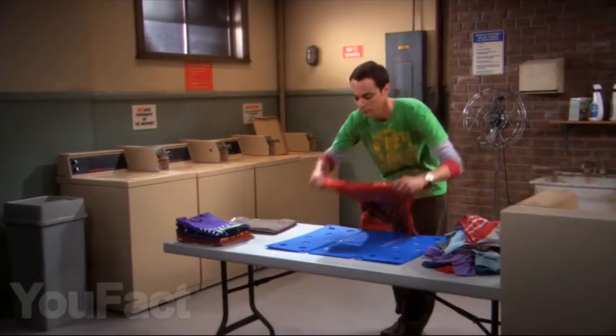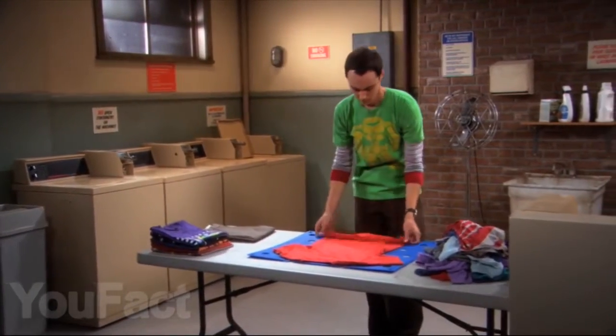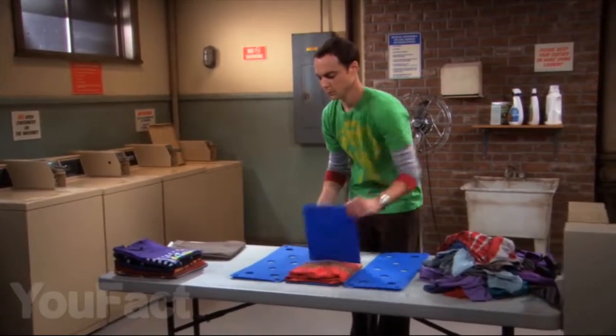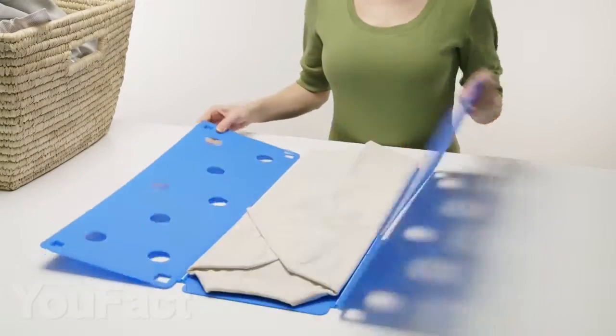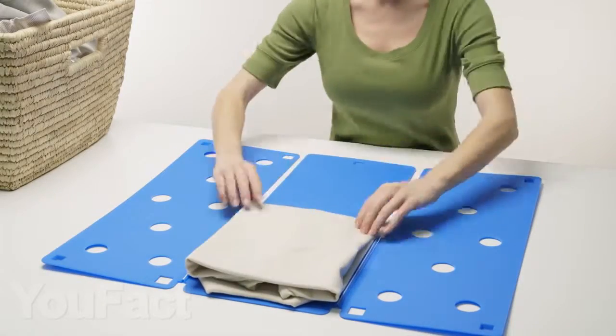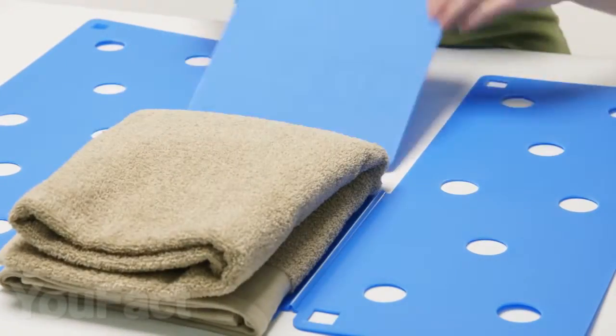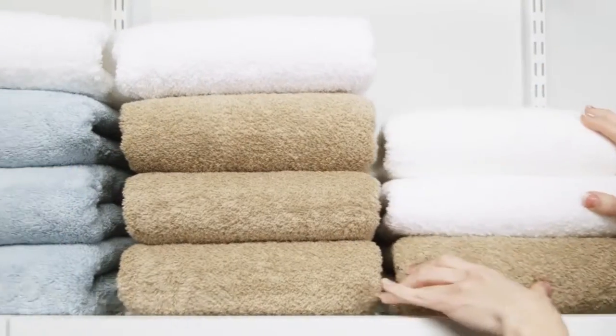Have you ever watched The Big Bang Theory? If you've watched it, then you probably remember Sheldon's gizmo, with the help of which he folded his clothes so neatly. It works very simply. You put an article of clothing on it, just a couple of movements, and it is already folded neatly. You can fold anything: t-shirts, shirts, jeans, and even a child can use it.